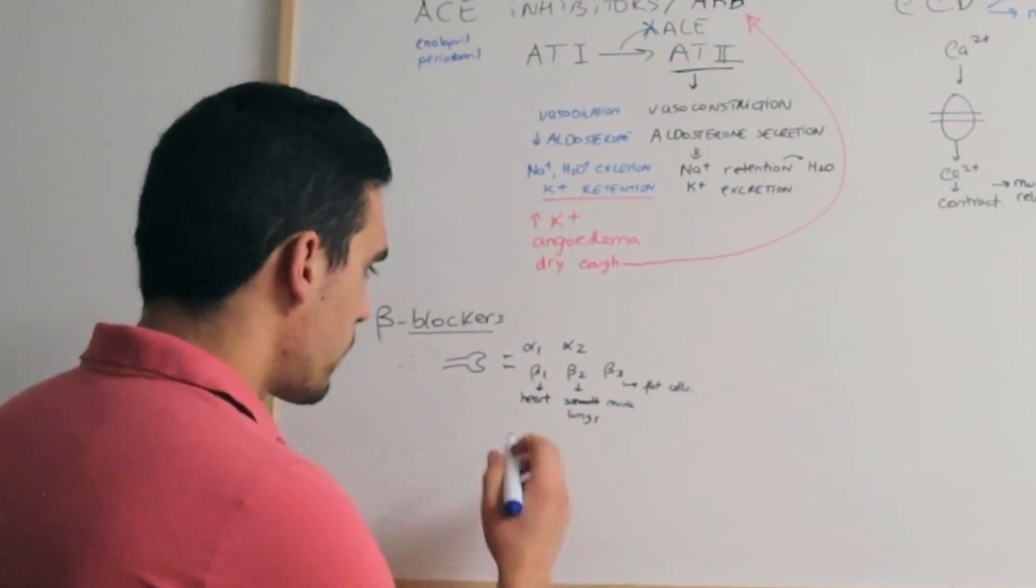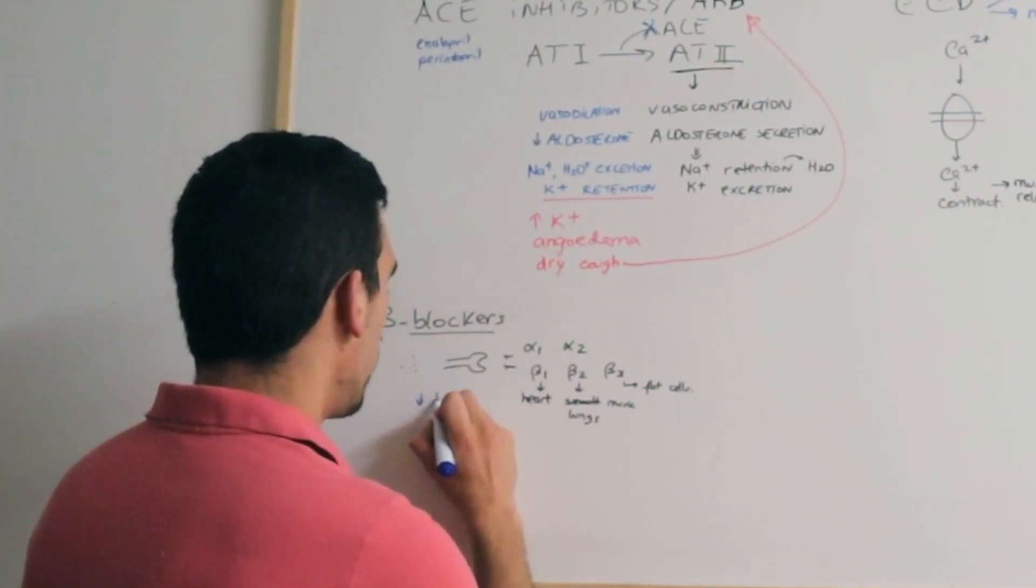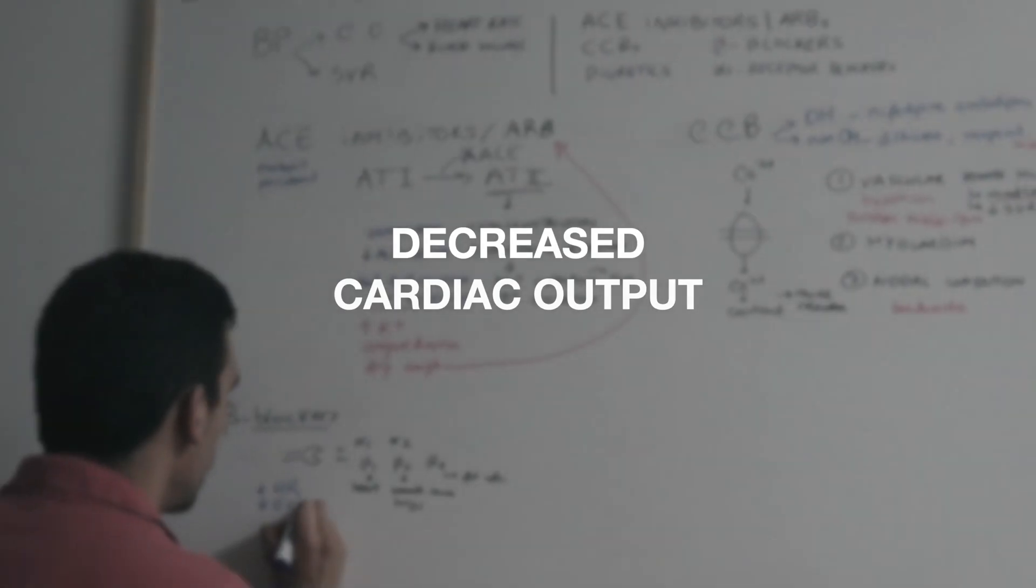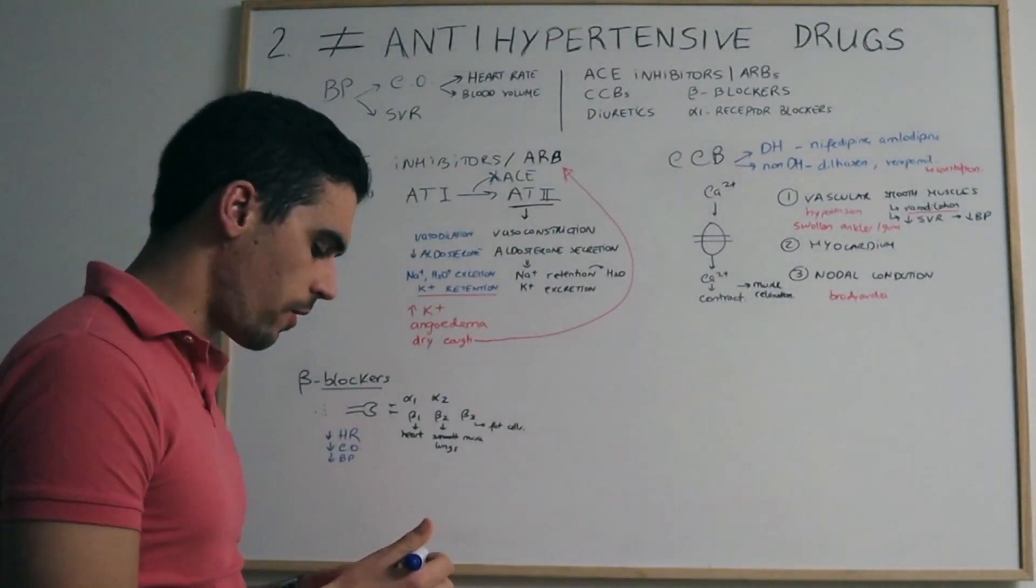When we're talking about the mechanism of action of the beta blockers, we're talking about the beta-1. When they block it on the heart, there is a decreased heart rate, decreased cardiac output, and decreased blood pressure. That's the mechanism of action.